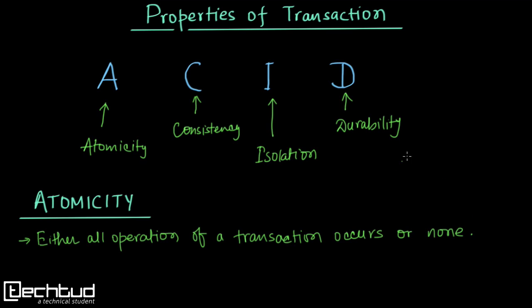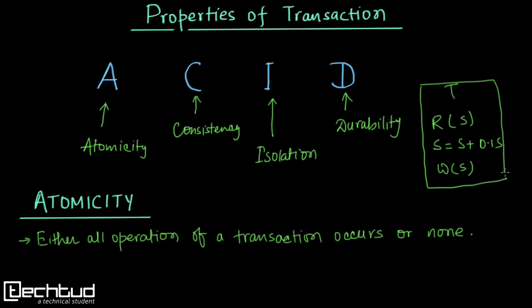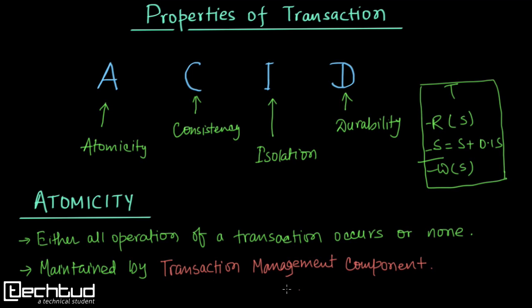There should not be a case where half of the operations of a transaction are performed and half are rejected. For example, as we studied in the last lecture, to increase the salary, first we read salary S, then we update S = S + 0.1S, and then write S. This transaction to increase salary by 10% has three operations — either all three should be completed or none will be performed. This atomicity is maintained by the transaction management component of the DBMS.